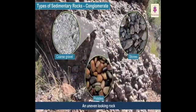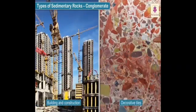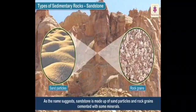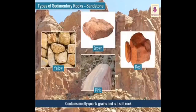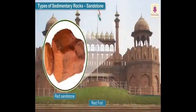Conglomerate consists of coarse gravel, stones, and pebbles which solidify into an uneven rock. It shows patches of different colors and is used for building construction and decorative tiles. Sandstone, as the name suggests, is made up of sand particles and rock grains cemented with minerals. It contains mostly quartz grains and is a soft rock, mostly yellow, brown, red, and pink in color. The Red Fort in Delhi is made up of red sandstone.